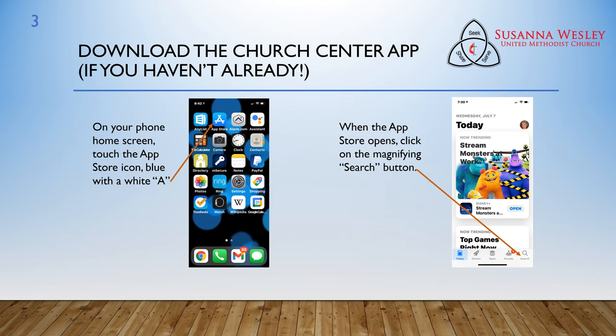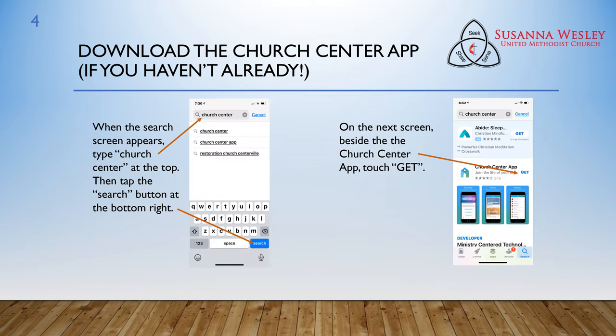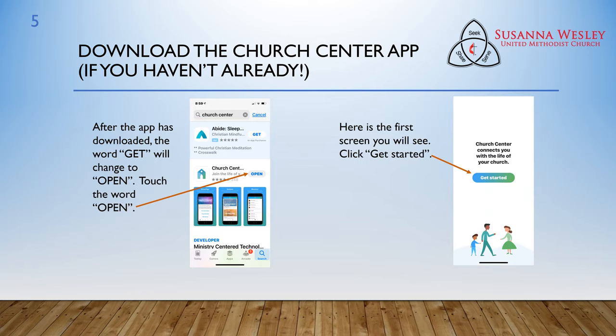The first thing to do is to download the Church Center app if you haven't already done that. On your home screen, touch the App Store icon, which is a blue square with a white A. When the App Store opens, click on the magnifying search button at the bottom right. When the search screen appears, type Church Center at the top, then tap the search button at the bottom right. On the next screen, beside the Church Center app, touch Get. After the app is downloaded, the word Get will change to Open. Touch the word Open.